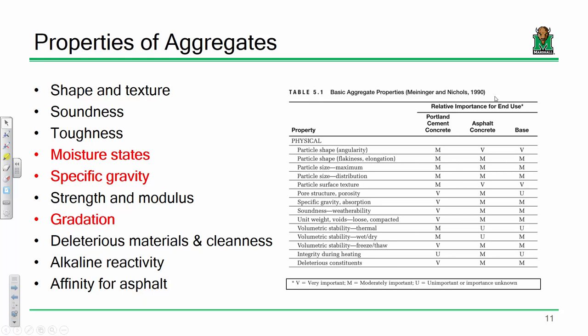Let's talk about some properties of aggregate. Our job is to understand how to classify that aggregate. The really important ones are moisture state and gradation. Gradation — I mean sieve analysis — we're going to spend a fair amount of time on. There are other properties like toughness, shape, and strength modulus that matter depending on the application. For instance, specific gravity is very important for Portland cement concrete but only moderately important for asphalt or as a base material.